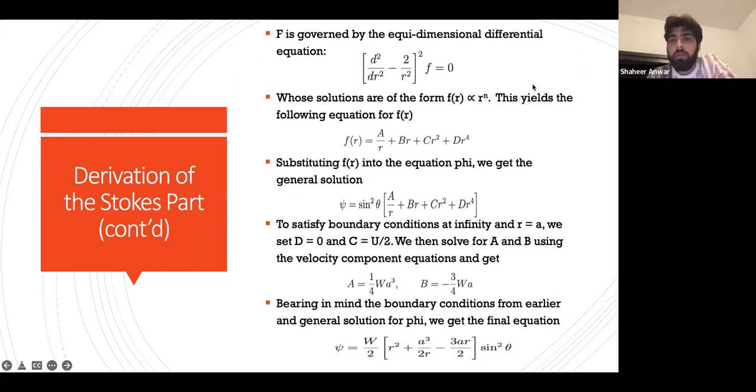f is governed by an equidimensional differential equation. This is a fourth-order PDE whose solutions are of the form f(r) = r^n. This means n would be -1, 1, 2, and 4, as you can see over here.